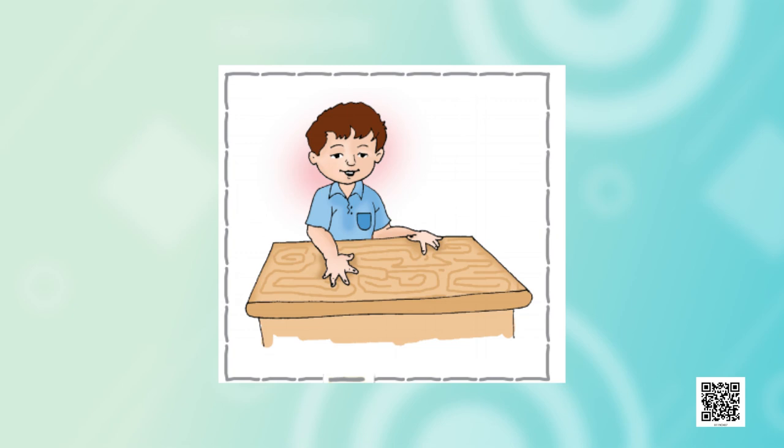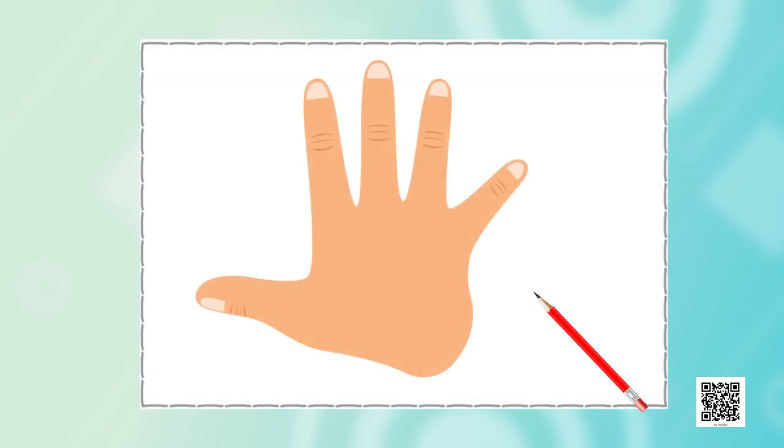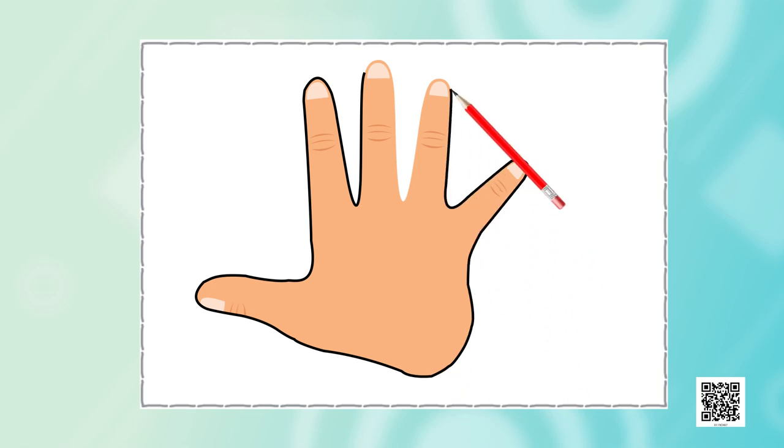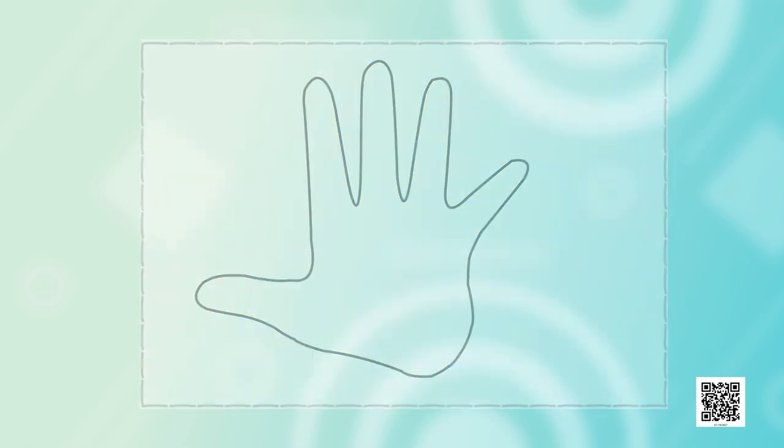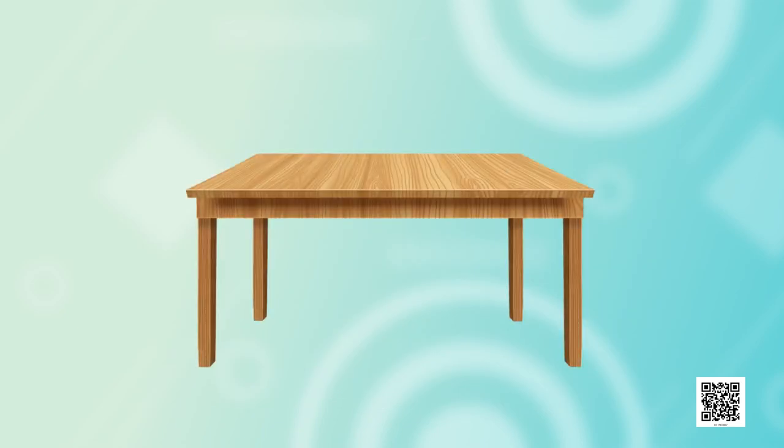Now let's measure this table. We will use a pencil. Hey, why not make a picture of our hand? For this, keep your hand on a piece of paper like this and now make its outline with the help of a pencil. And this will make a hand span. Come, let's measure the length of this table now.